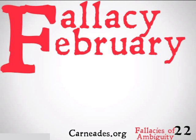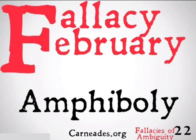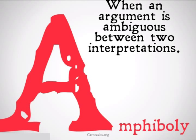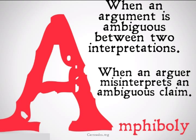Welcome back to Fallacy February with 90-second philosophy and carnadies.org. Today we're going to be looking at the other fallacy of ambiguity, the fallacy of amphiboly. Amphiboly is when an argument is ambiguous between two different interpretations, or when an arguer misinterprets an ambiguous claim. Let's take a look at some examples.